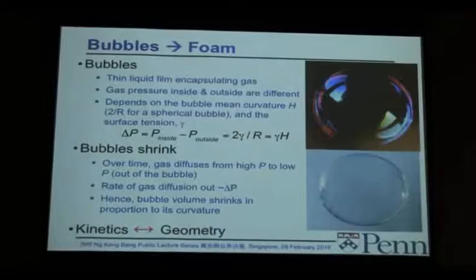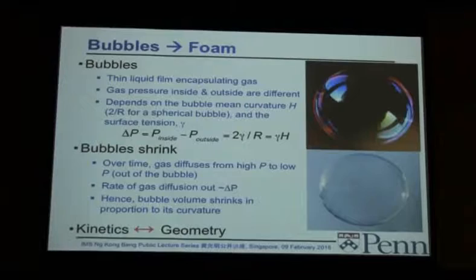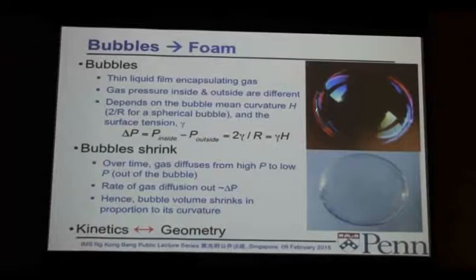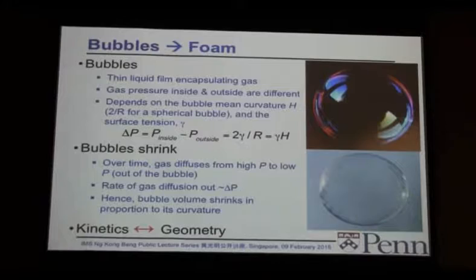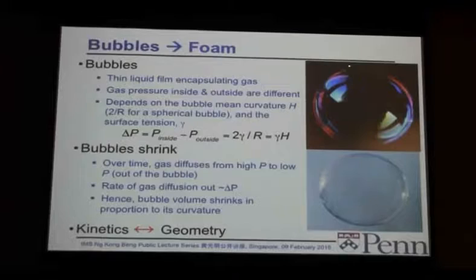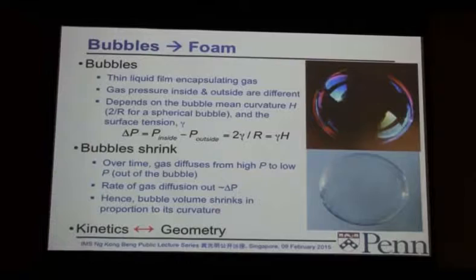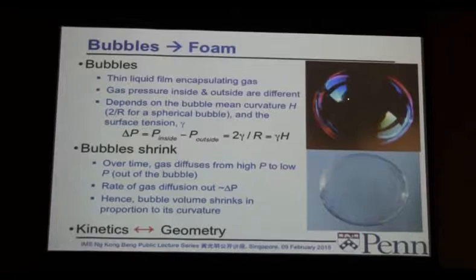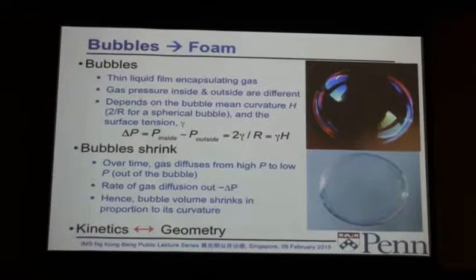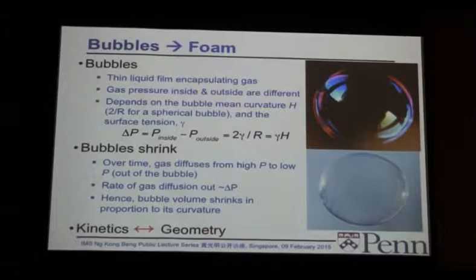If you've ever blown a bubble with a bubble wand, you end up with a liquid film on the outside, with polymers and surfactants inside the water to keep it from popping. The outside of the bubble is a thin liquid film, and the inside is just air — a gas. The pressure of the gas on the inside and outside are different, because the bubble is trying to shrink and squeeze the gas inside. That pressure difference depends on the surface tension gamma and the size of the bubble.